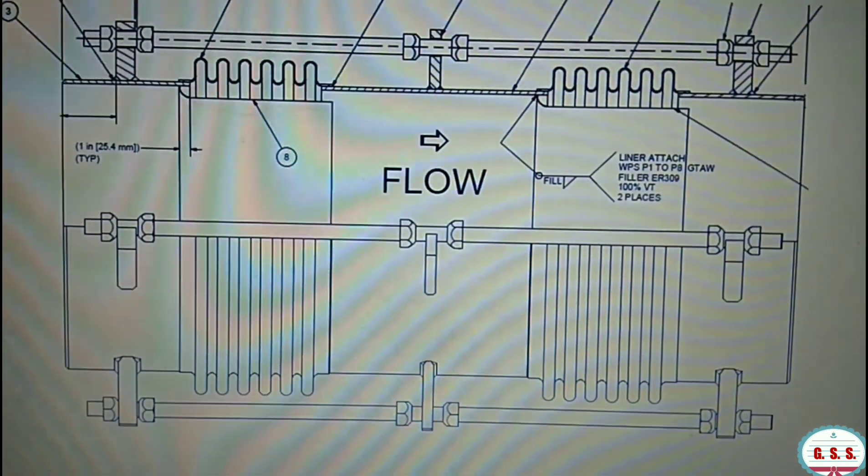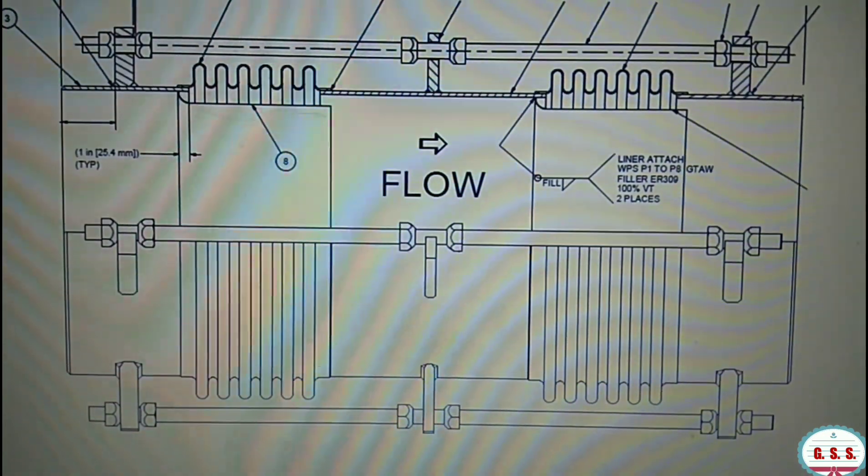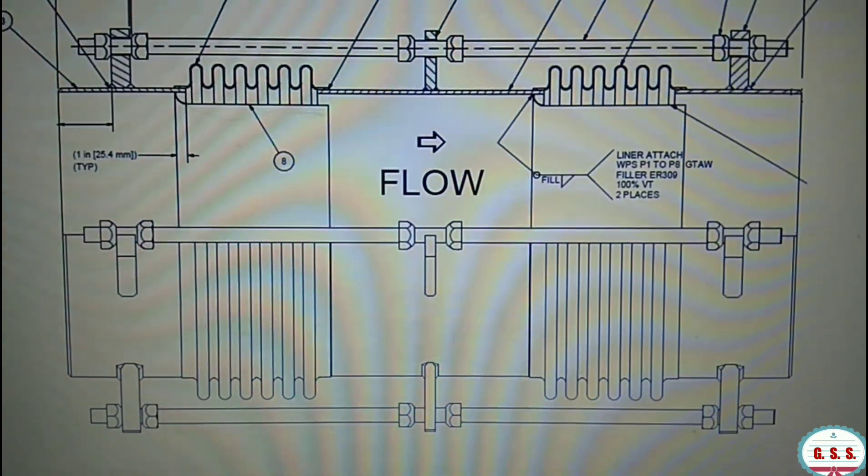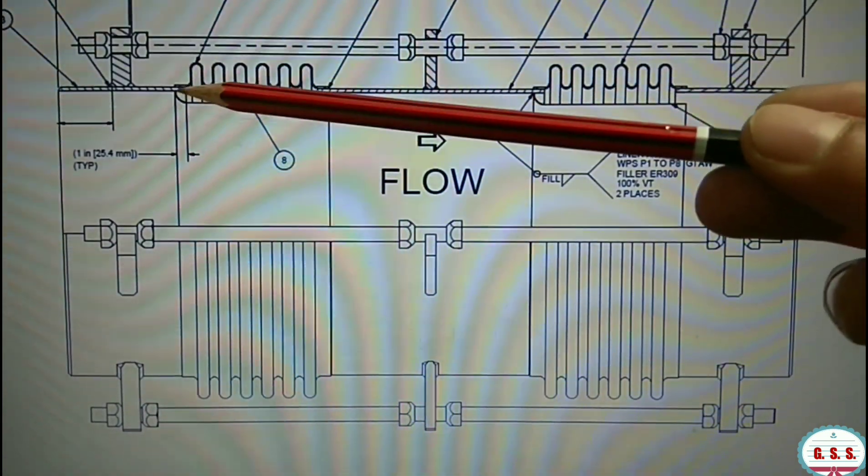That's why this type of bellows cannot take any twisting or torsion because this joint is very weak. Due to torsion or twisting, this joint may fail.